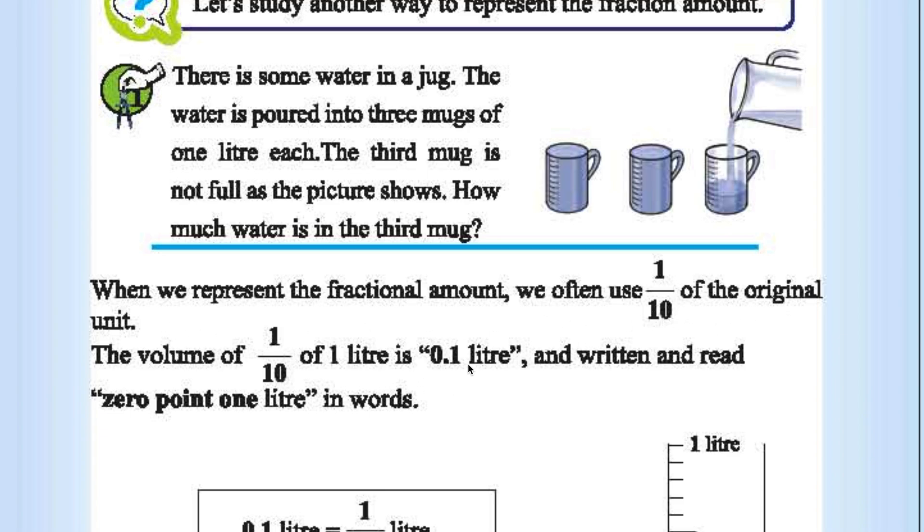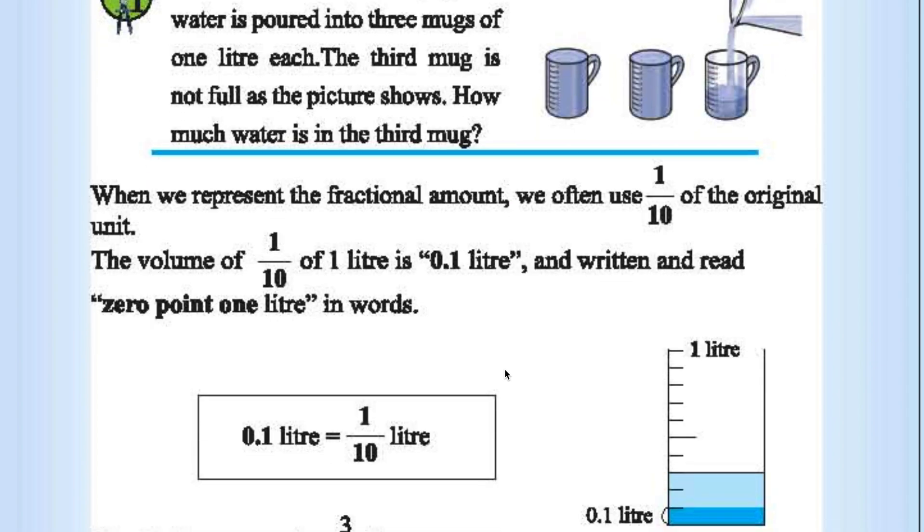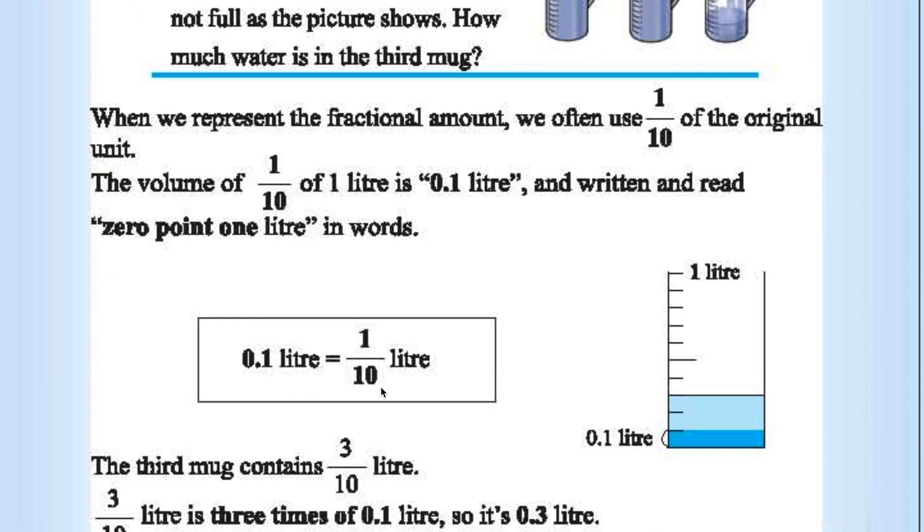1 by 10 is nothing but 0.1 liter. If this comes under first division, then it is 0.1 liter. If the water comes to second division, it will be 0.2 liter. Total 1 liter is divided into 10 parts. Each part represents 1 by 10. 1 by 10 is nothing but 0.1. So 0.1 liter is nothing but 1 by 10, as we said earlier.